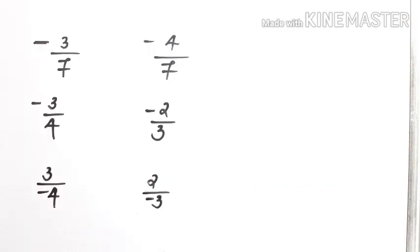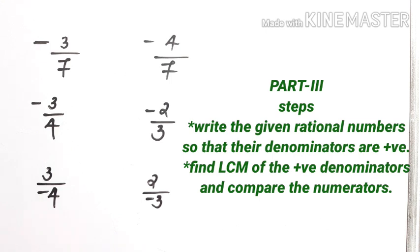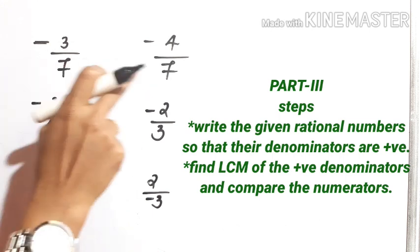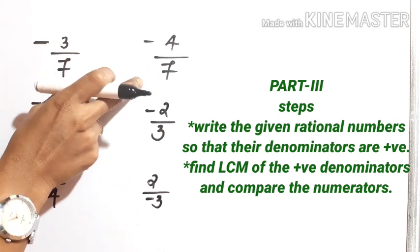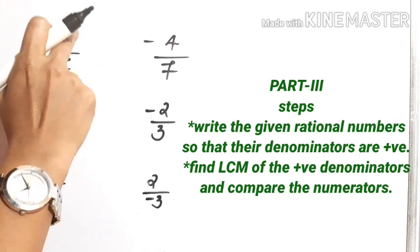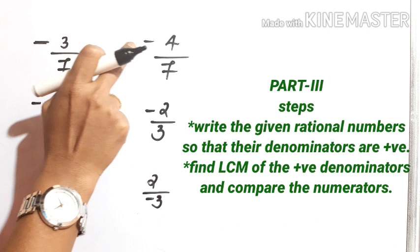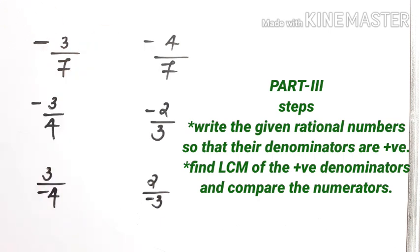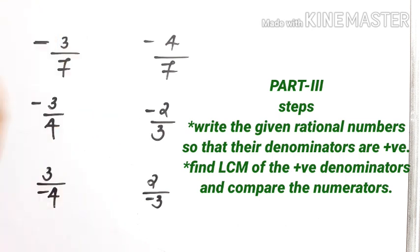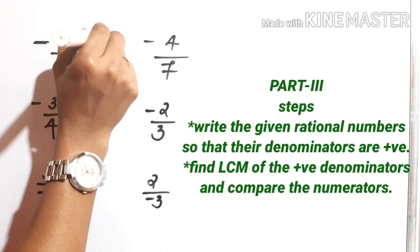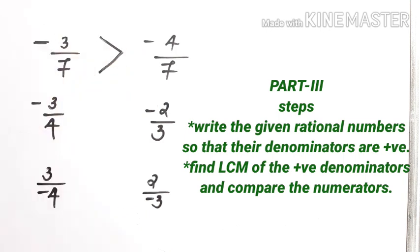Here we have to compare minus 3 by 7 and minus 4 by 7. Listen children, here we can see positive denominators — both are 7, equal. In this type of question, we have to compare only the numerators or P's. Minus 3 and minus 4: comparison of integers, familiar? You have learned in earlier classes. So, minus 3 is greater than minus 4. Therefore, minus 3 by 7 is greater than minus 4 by 7.